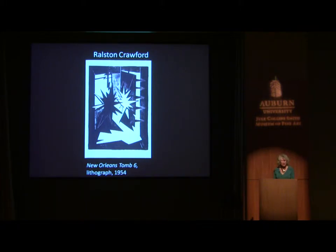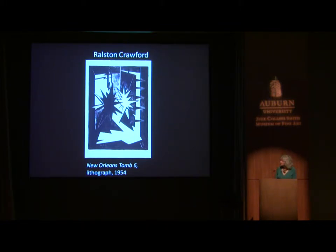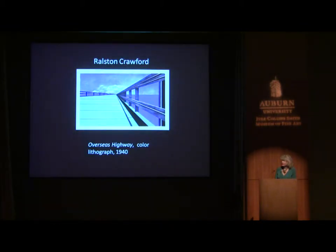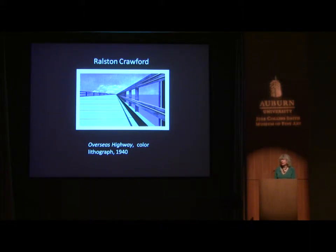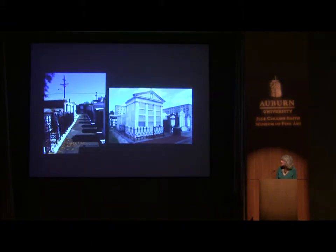The artist that made me realize you could have regionalism with the avant-garde is Ralston Crawford and his lithographs of New Orleans. He is associated with the precisionist movement, an important name in American art history. Here's an example of his early precisionist style—sleek architectural structures that are somewhat abstracted. He served as a visiting professor at LSU from 1949 to 1950, and then in 1954 went to Paris where, under a master printer, he made lithographs from photographs taken on trips to New Orleans.